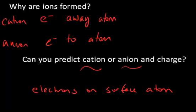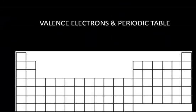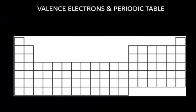The electrons on the surface, or the outer shell of the atom, are called the valence electrons, and chemistry occurs with these valence electrons. Electrons are either going to be lost, gained, or shared upon a chemical change. The number of valence electrons can be predicted by the position on the periodic table.